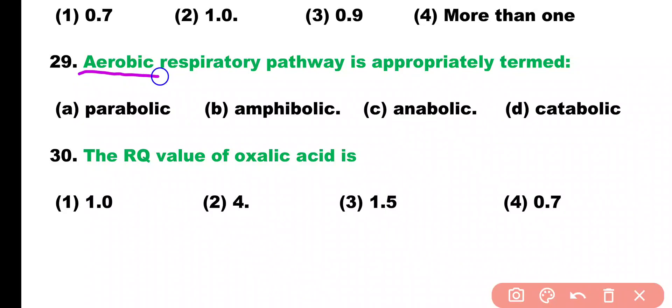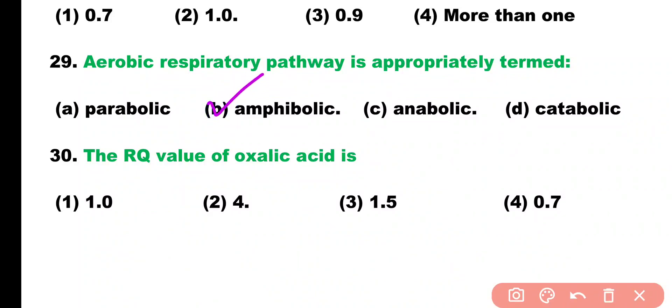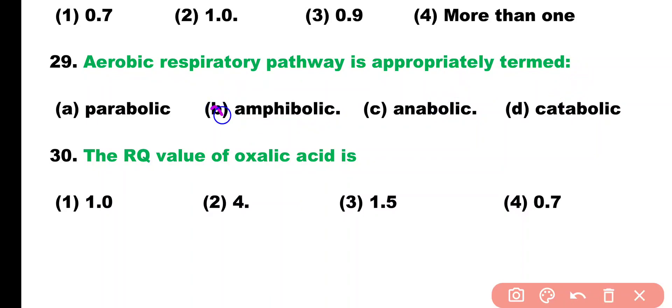Question number 29. Aerobic respiratory pathway is appropriately termed as: parabolic pathway, amphibolic pathway, anabolic pathway, or catabolic pathway. Correct answer is option 2. Aerobic respiratory pathway is termed amphibolic, meaning it has both anabolic and catabolic processes within itself.